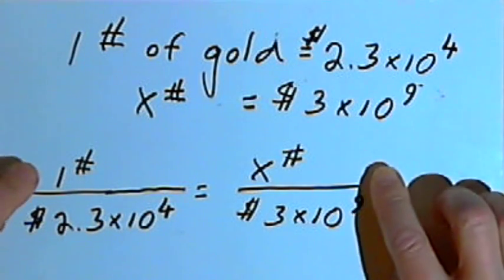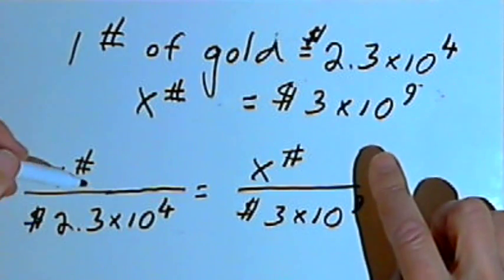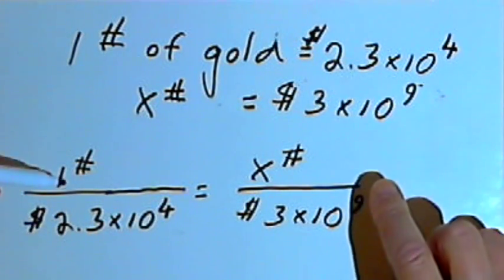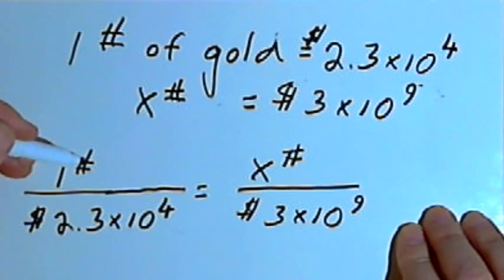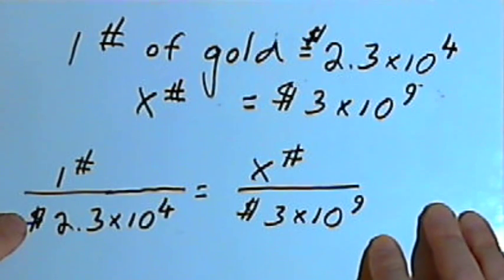Now look what I have here. Both of these fractions, which I've set equal to each other, have pounds in the numerators and dollars in the denominators. In other words, I'm using the same units for the numerators and then the same units for the denominators. And now we want to find out what x is.